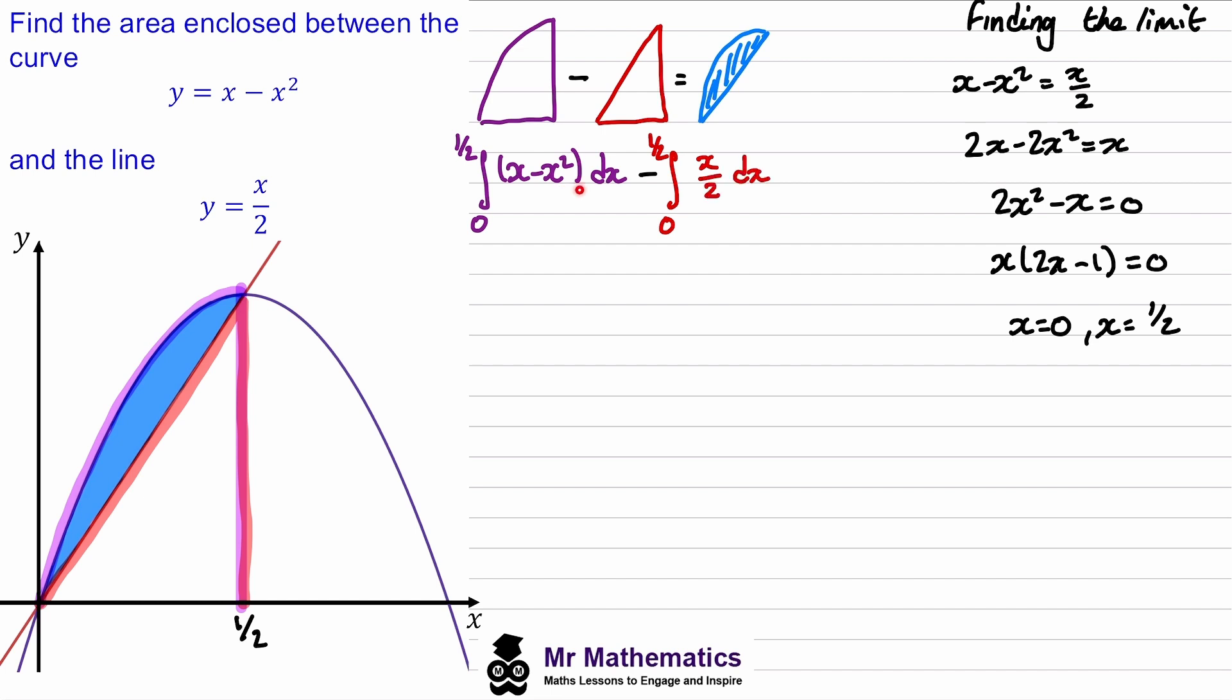There's a couple of ways we could do this. We could just find the area of this triangle, but what I'm going to do is integrate all of this at once because we have the same limits. So we've got x minus x squared minus x over 2 all integrated with respect to x.